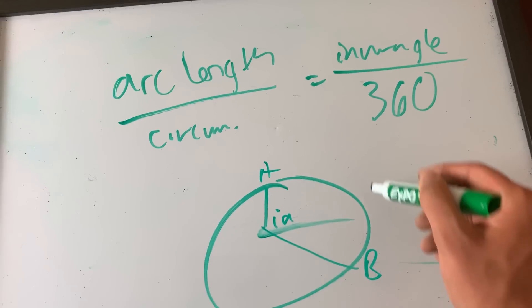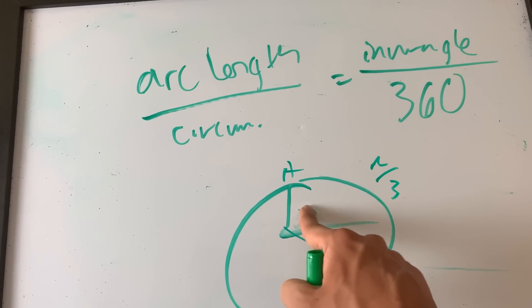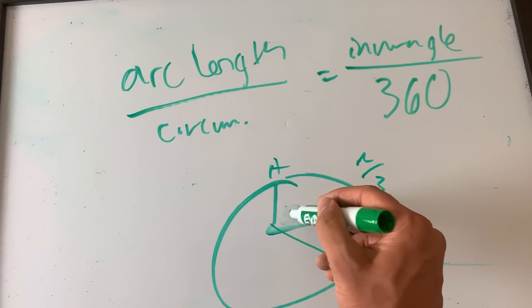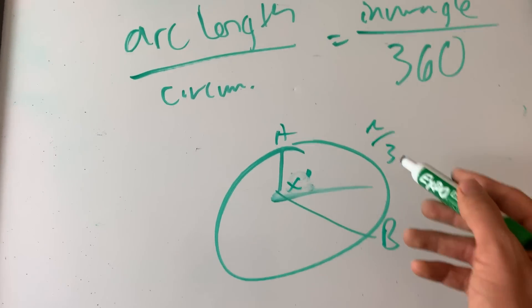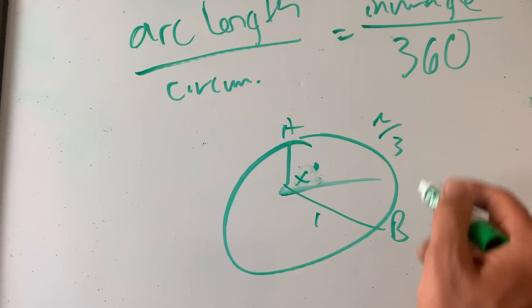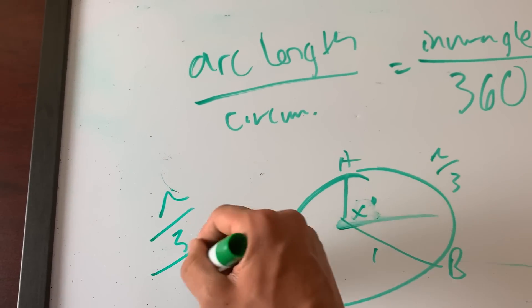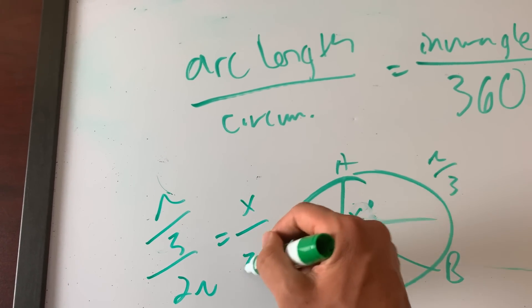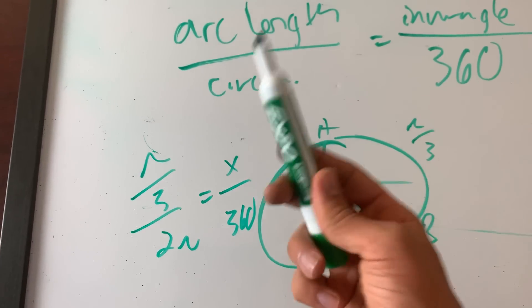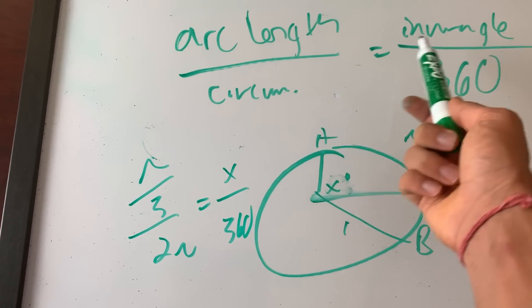Say this arc is pi over three. Say the inner angle, it asks you find the inner angle, so find x. Say circumference, say the radius is one, so that means circumference is 2 pi. So you have pi over three divided by 2 pi equals x over 360. This is going to tell you how to find x, it'll find the inner angle. This is what you do: arc length over circumference equals inner angle over 360.